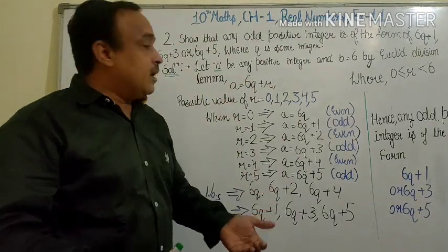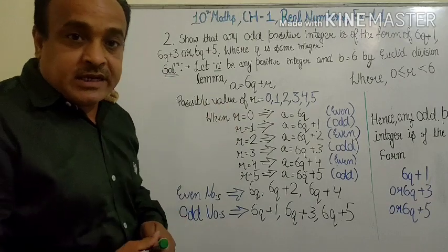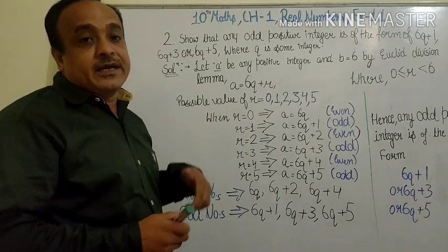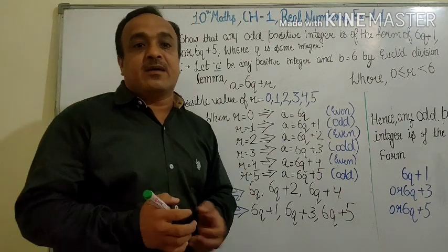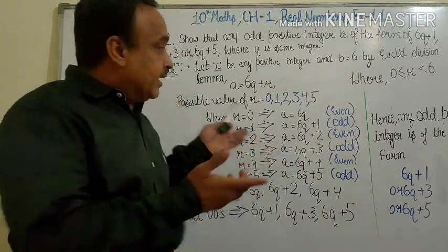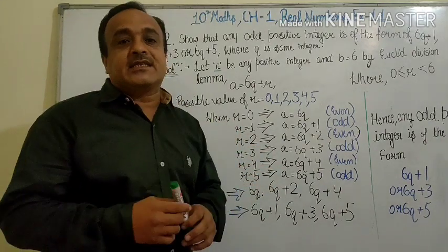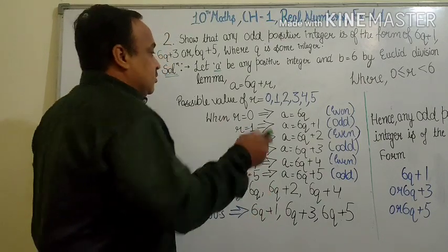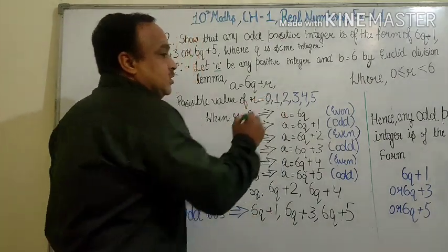When any number, say 66, is divided by 6, the remainder is 0. So the possible remainders are 0, 1, 2, 3, 4, and 5.